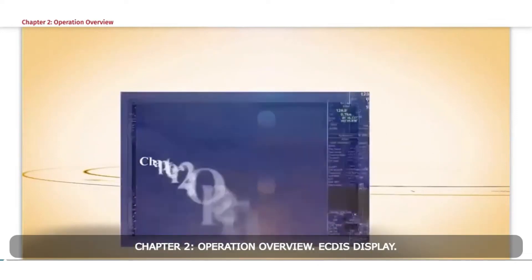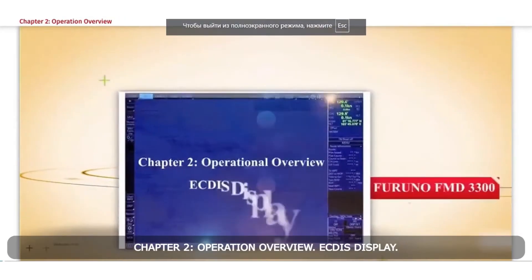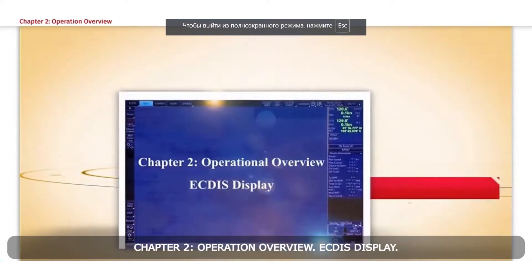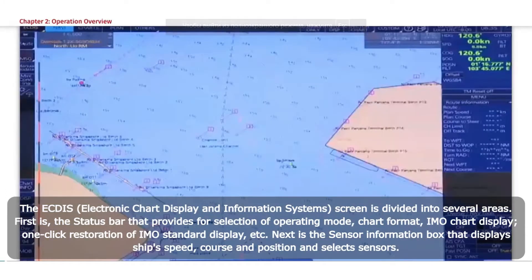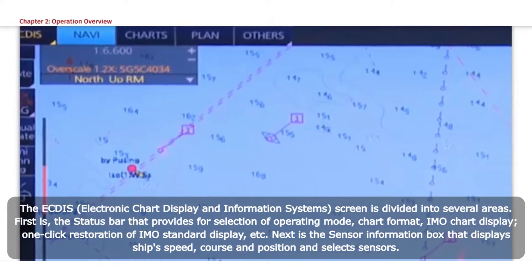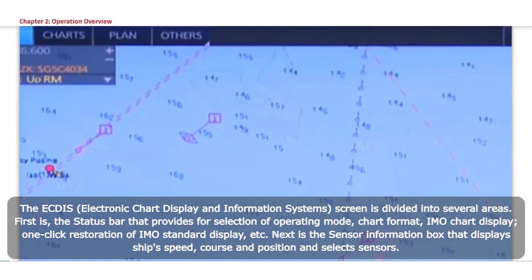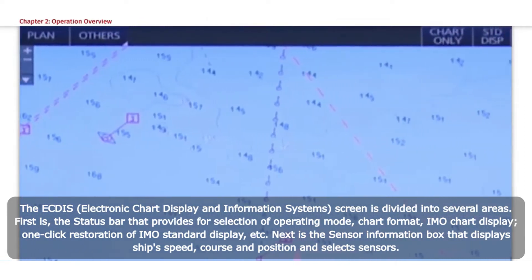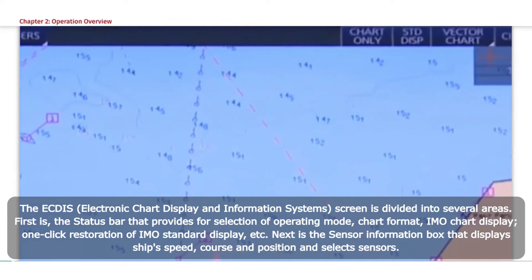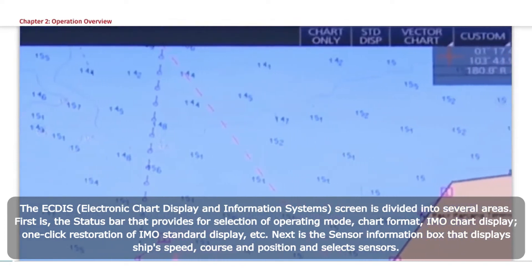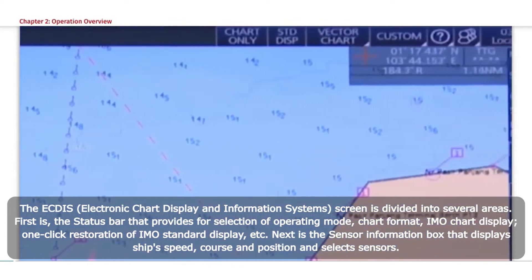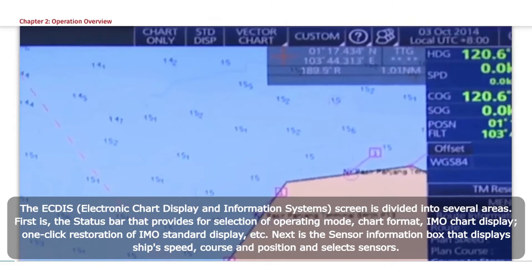Chapter 2 Operational Overview: ECDIS Display. The ECDIS, Electronic Chart Display and Information Systems screen is divided into several areas. First is the Status Bar that provides for selection of Operating Mode, Chart Format, IMO Chart Display, and One-Click Restoration of IMO Standard Display.